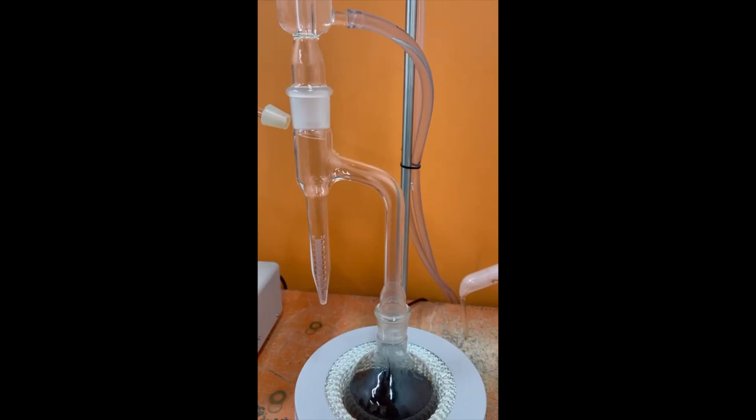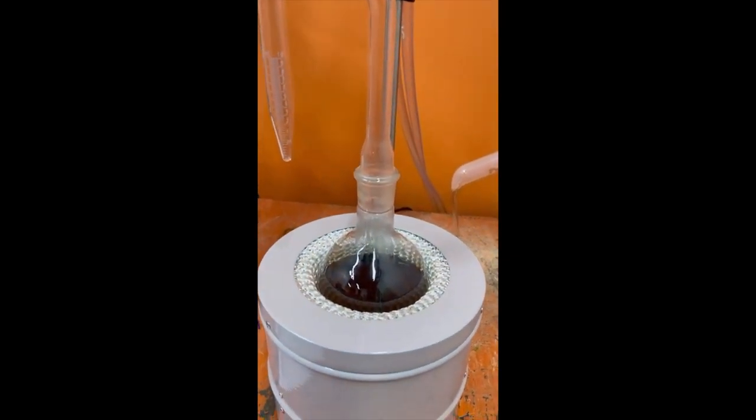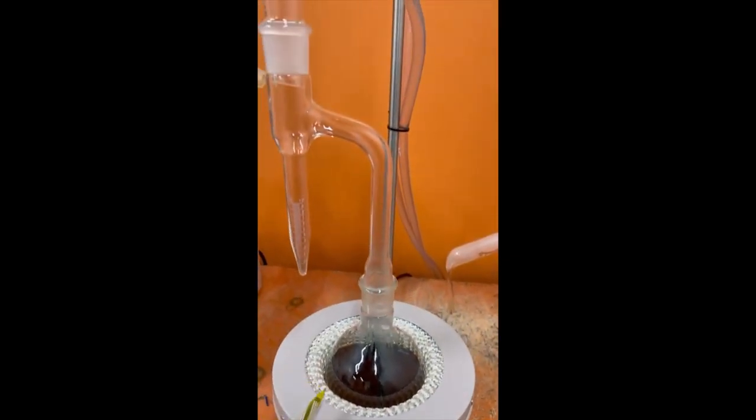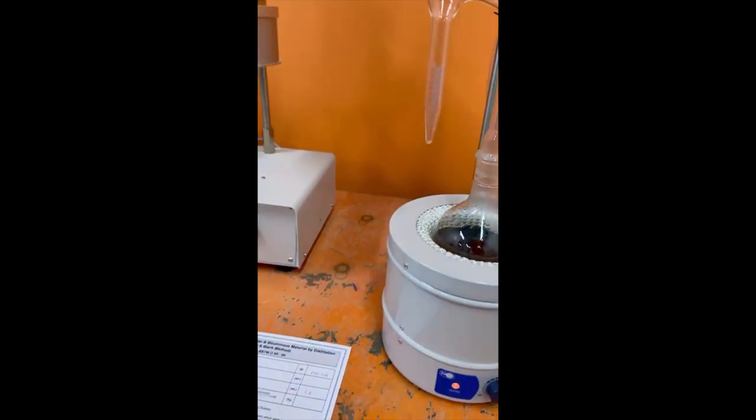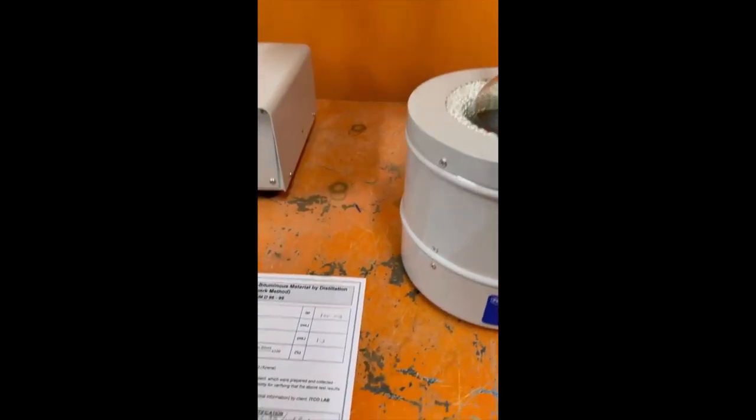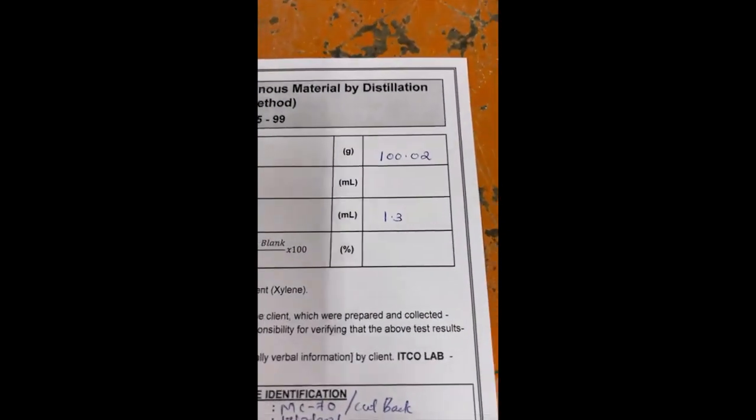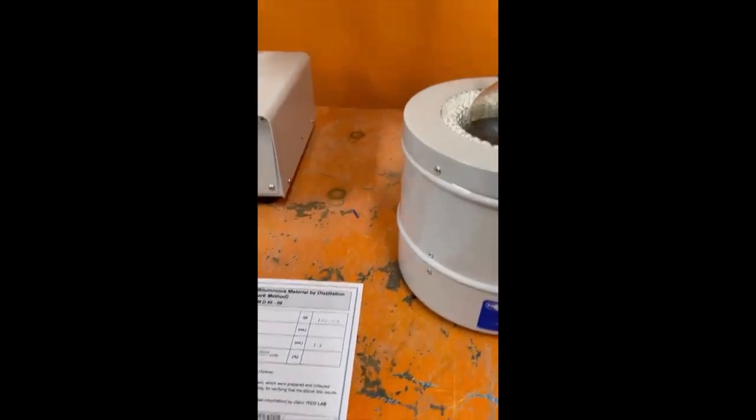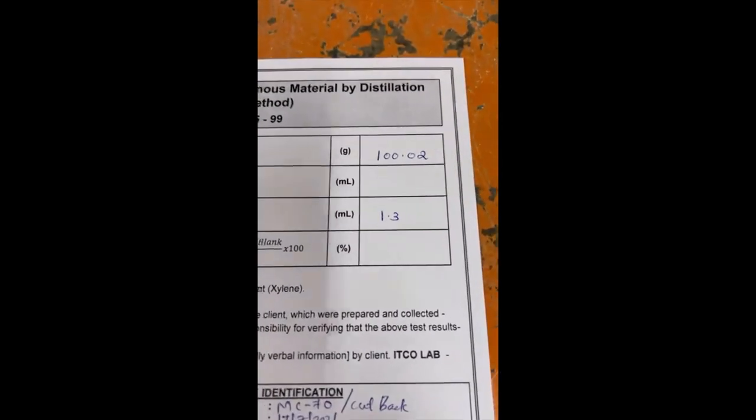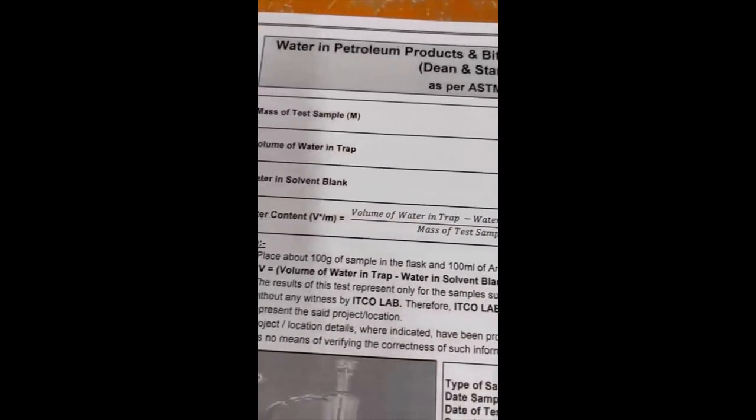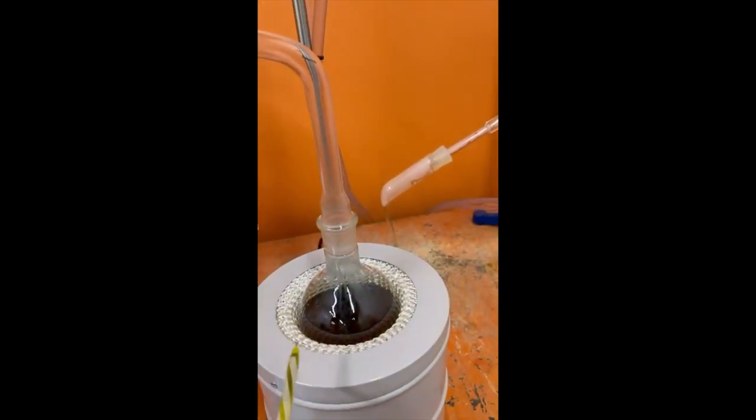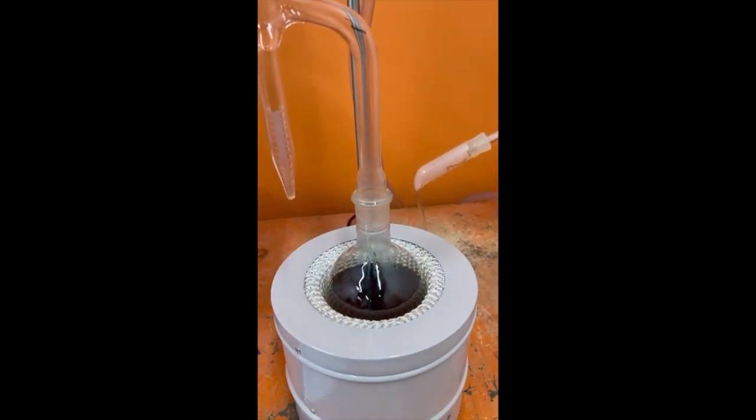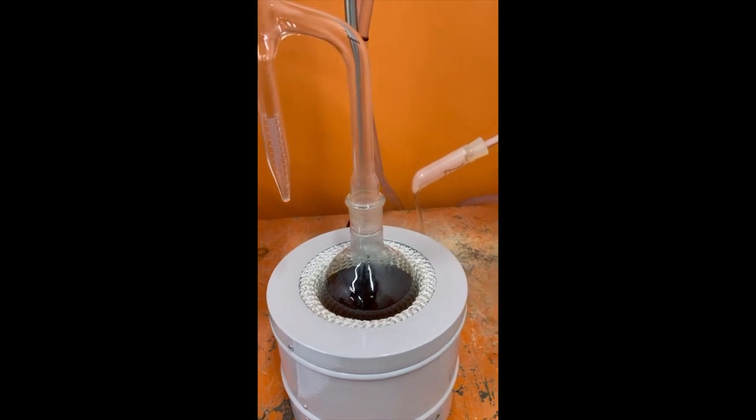Now I took 100 milliliters of bituminous MC-70 bituminous sample and 100 milliliters xylene I added to the cylinder. Now I started heating.